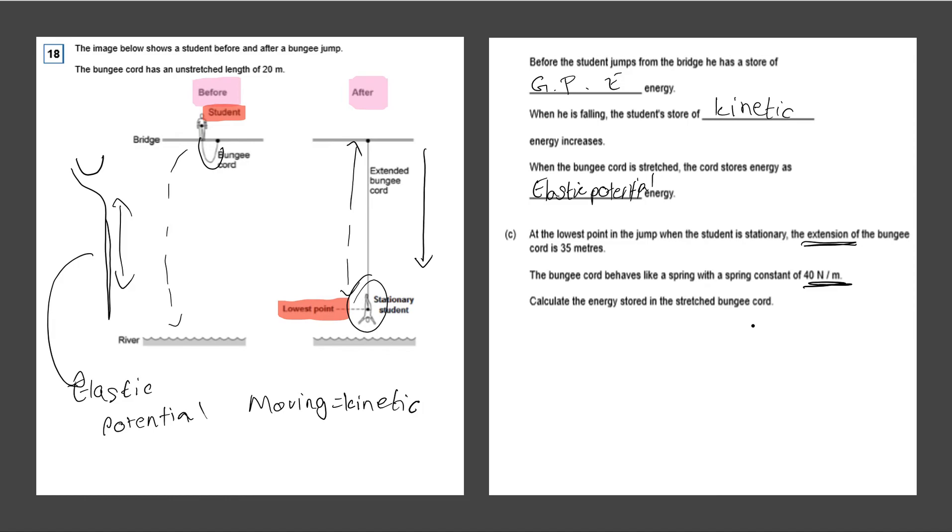Calculate the energy stored in the stretched bungee cord. So we have to do a calculation. So the first step is going to be writing out the formula, which is a half multiplied by the spring constant multiplied by the change in length delta x squared.